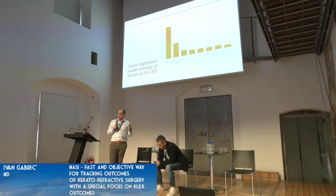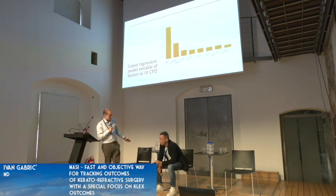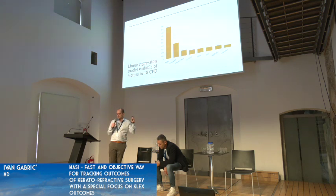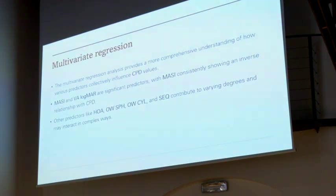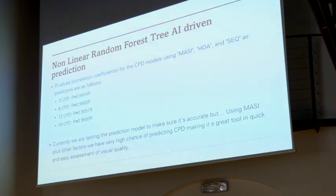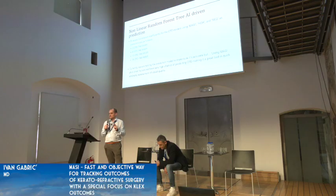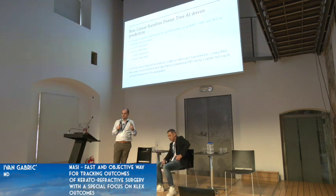So we came up with one thing you can measure objectively within seconds. An OSIRIS measurement takes four to five seconds and you get a score that correlates amazingly with quality of vision. We then created a multivariate regression and even a nonlinear random forest machine learning algorithm where we fed all the data — and when feeding all available data including MASI, ocular wavefront information, HOA, spherical equivalency, and mesopic pupil size — we achieved up to 94 to 96% predictability of contrast sensitivity, effectively skipping a test which takes 20 minutes to do.